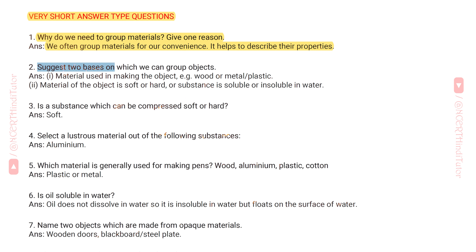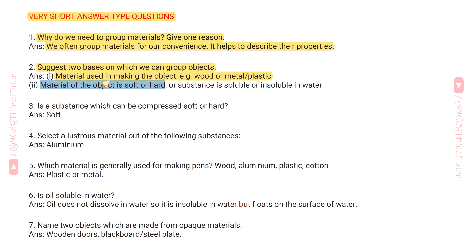Question 2: Suggest two bases on which we can group objects. Answer: First, the material used in making the object — for example, wood, metal, or plastic. Second, whether the material is soft or hard, or whether the substance is soluble or insoluble in water.